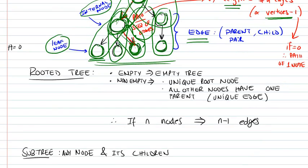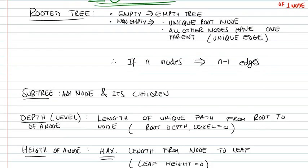So now this is just for terminology, and let's define a rooted tree. What exactly is a rooted tree? A rooted tree is a tree that when it is empty, we refer to it as an empty tree. It has no elements in it. And if it's not empty, this is where it gets interesting, it must have a unique root node.